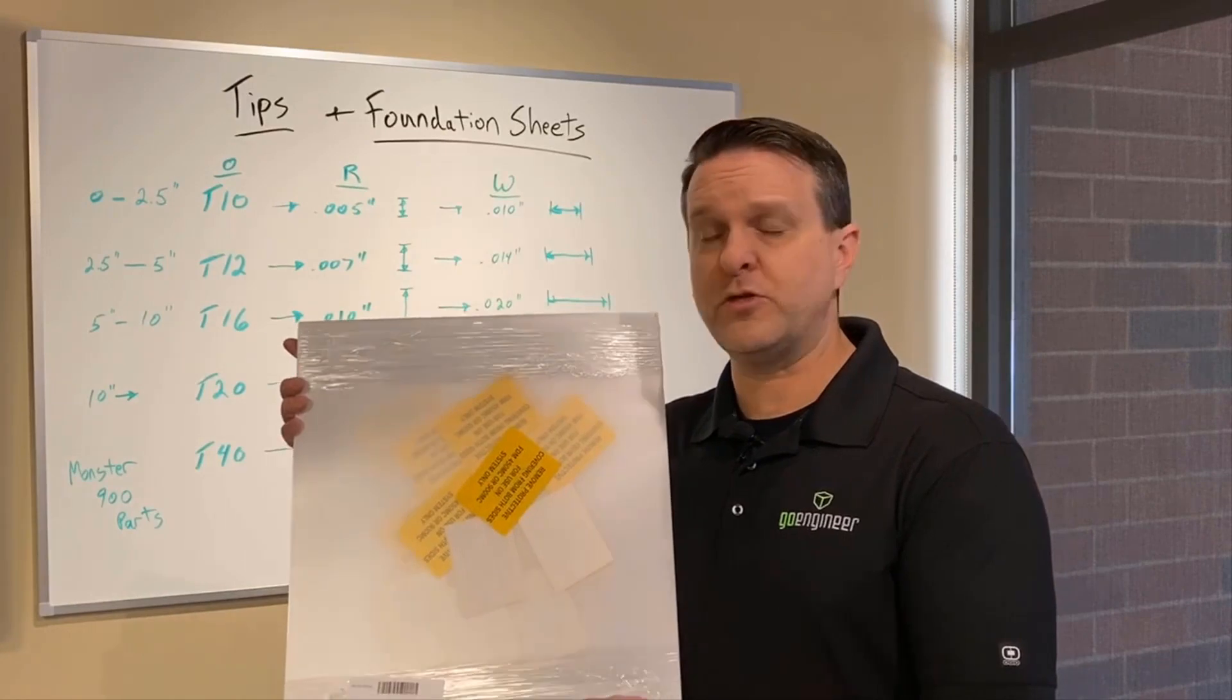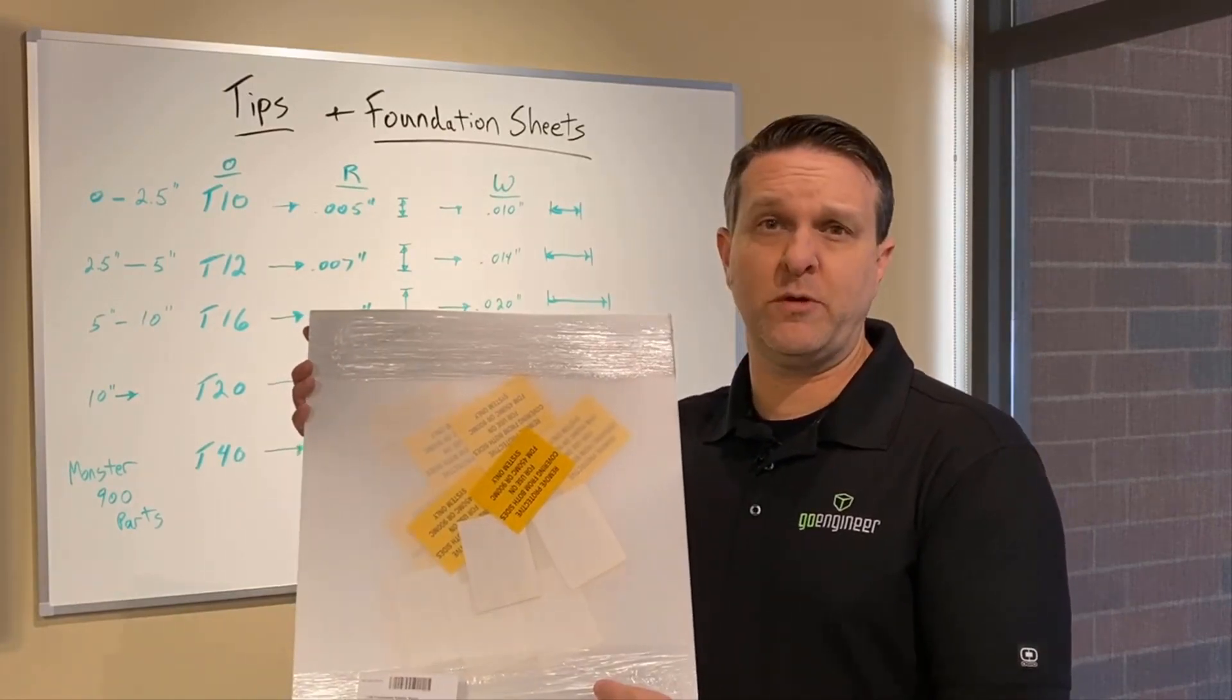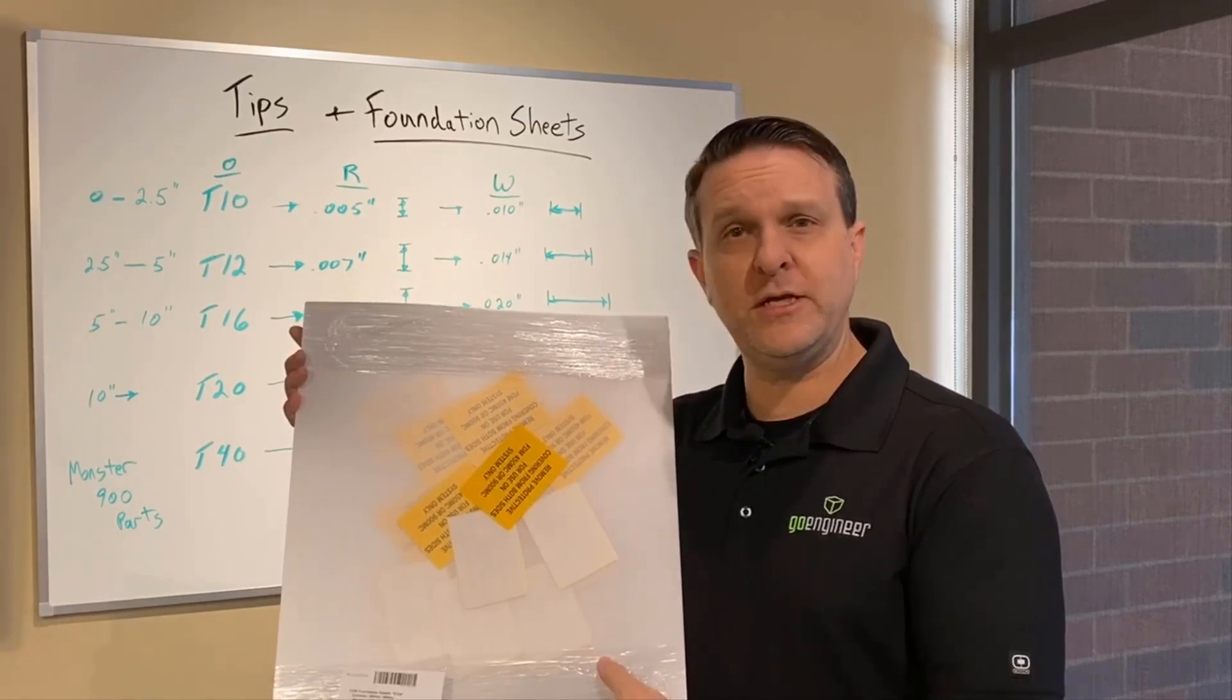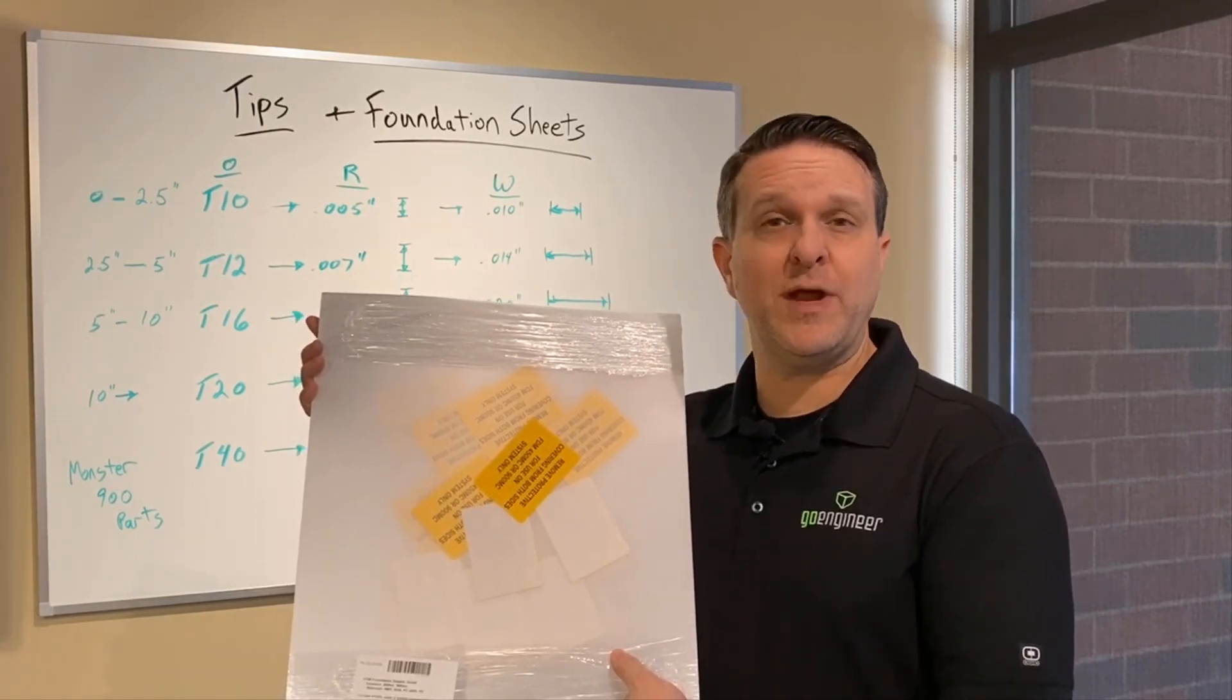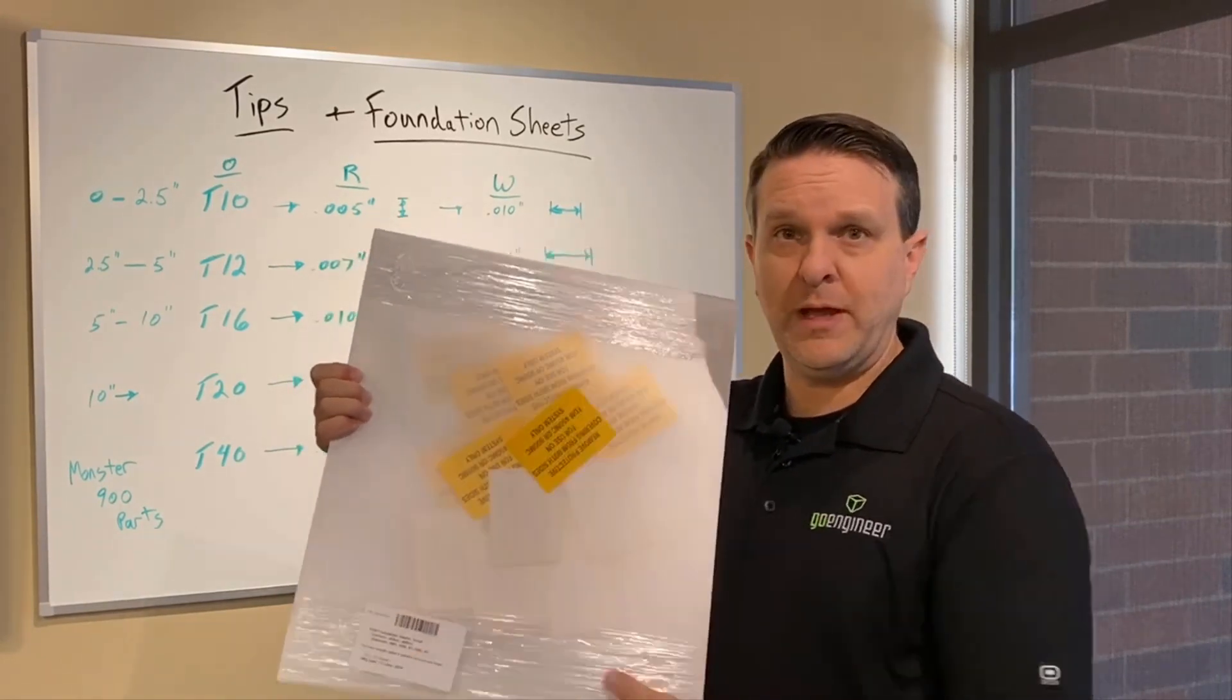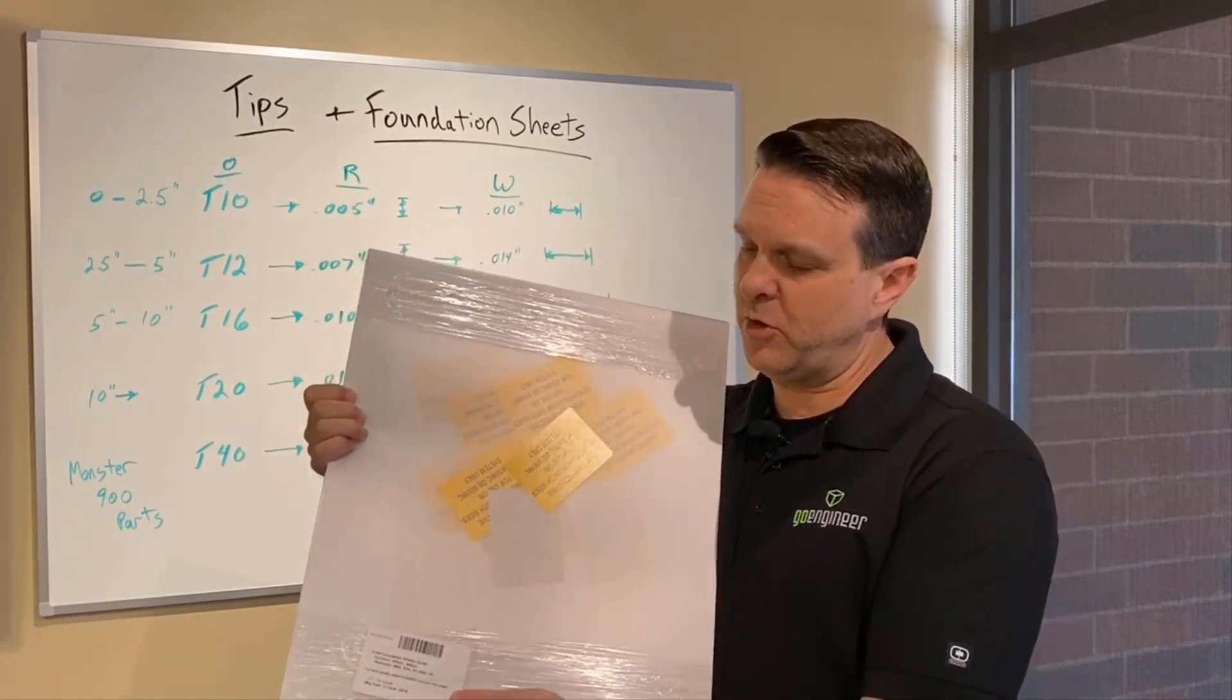The clear build sheets, whether it's an old Titan class system or whether it's up to the 450s and 900s of today, the clear build sheets are going to be the ones you're going to use for ASA, ABS, polycarbonate, and you can find that information on the label. I'll give you a quick zoom up on the label in just a moment.